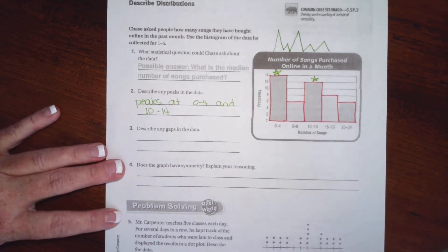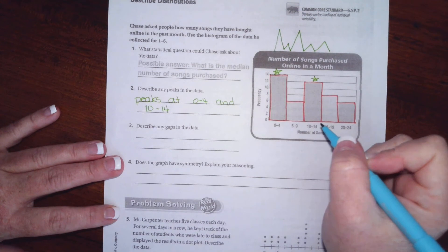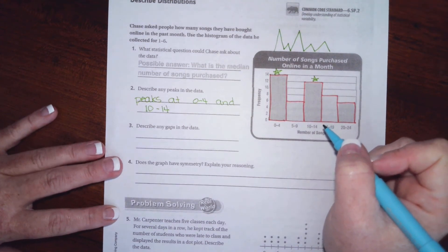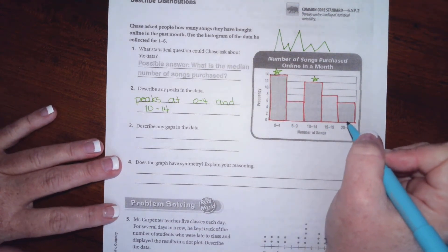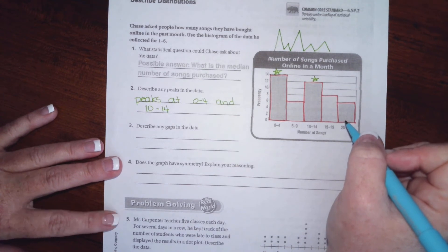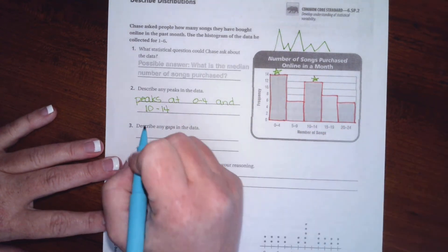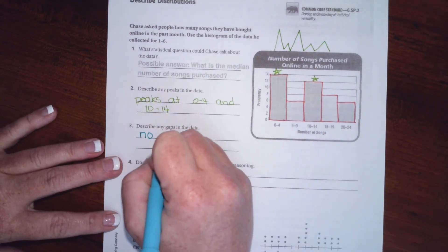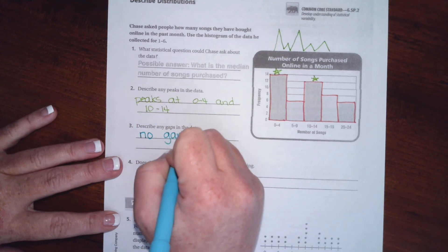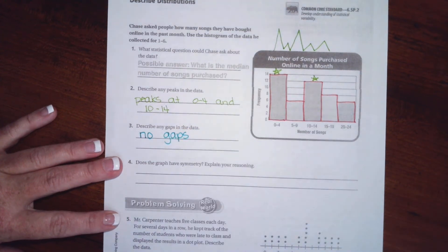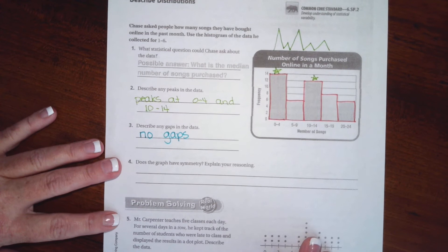Now when we're looking at this, do you see any places where there is no data, so any of these places on here that don't have a bar? I don't see any, so there will be no gaps.